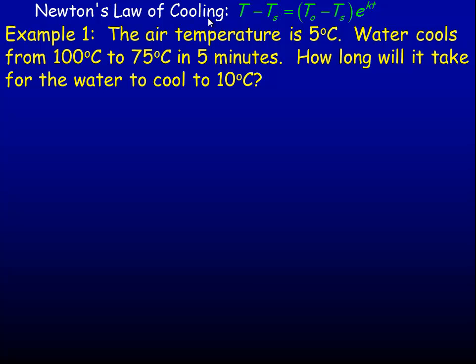We don't need to get into the rate until the second example. In this first example, the air temperature is 5 degrees Celsius. Water cools from 100°C to 75°C in 5 minutes. We're asked to find how long it will take for the water to cool to 10°C. In the second example, we'll find the rate it's cooling when it reaches 10 degrees.